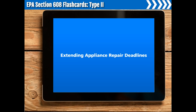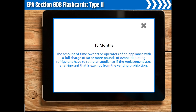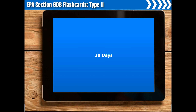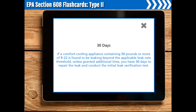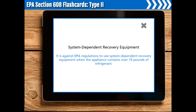Extending appliance repair deadlines. A certified service technician not being available cannot be used as a reason to extend the appliance repair deadlines. 18 months. 18 months is the amount of time owners or operators of an appliance with a full charge of 50 or more pounds of ozone-depleting refrigerant have to retire an appliance if the replacement uses a refrigerant that is exempt from the venting prohibition. 30 days. If a comfort cooling appliance containing 50 pounds or more of R-22 is found to be leaking beyond the applicable leak rate threshold, unless granted additional time, you have 30 days to repair the leak and conduct the initial leak verification test. System-dependent recovery equipment. It is against EPA regulations to use system-dependent recovery equipment when the appliance contains over 15 pounds of refrigerant.